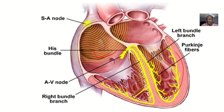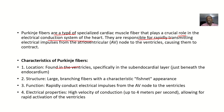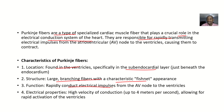The atria are up above, while the Purkinje fibers are found in the ventricles. The SA node, by contrast, is found in the atrium. The Purkinje fibers are found specifically in the sub-endocardial layer. Structurally, they are large and branching, with a characteristic fishnet appearance. They rapidly conduct electrical impulses from the AV node to the ventricles.